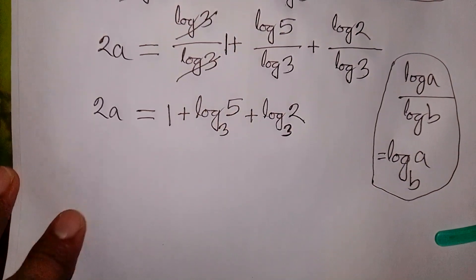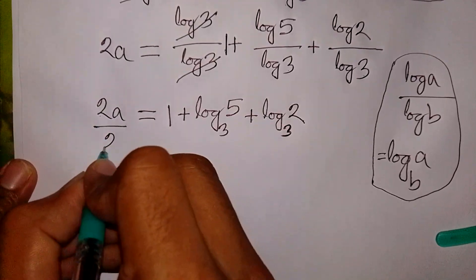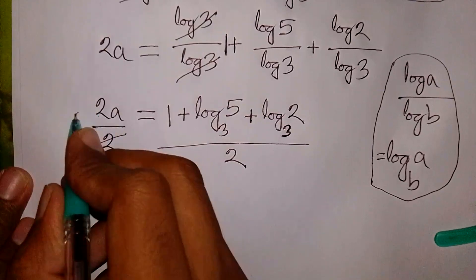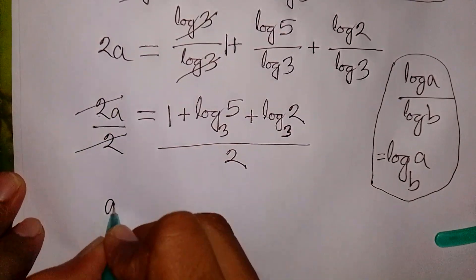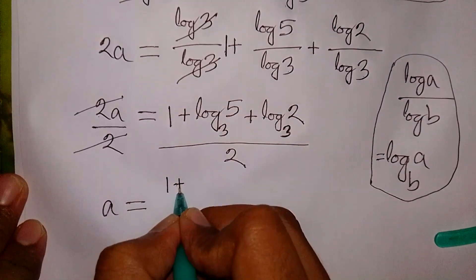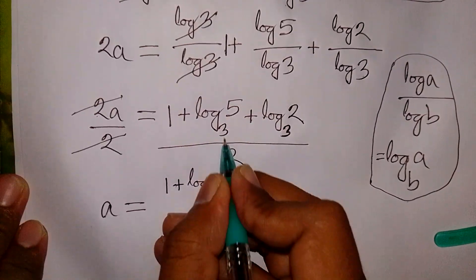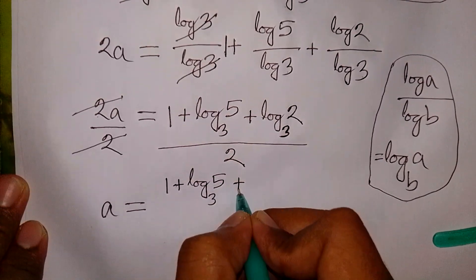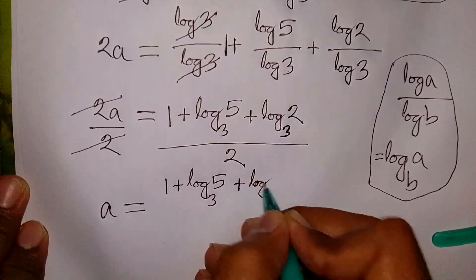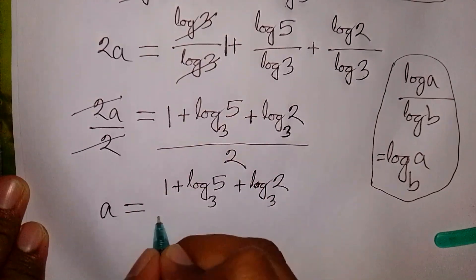Now we need the value of A. So we divide by 2 on both sides — this 2 will be cancelled. Here, A will be equal to 1 plus log₃5 plus log₃2, all over 2. So this is the final answer.